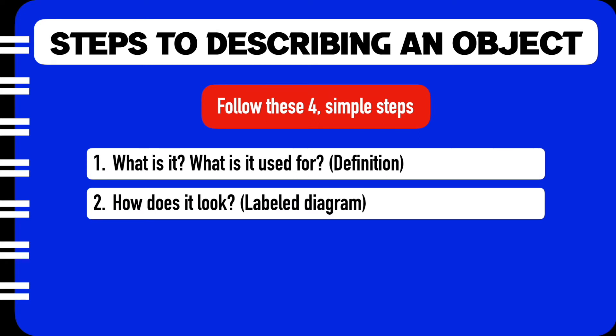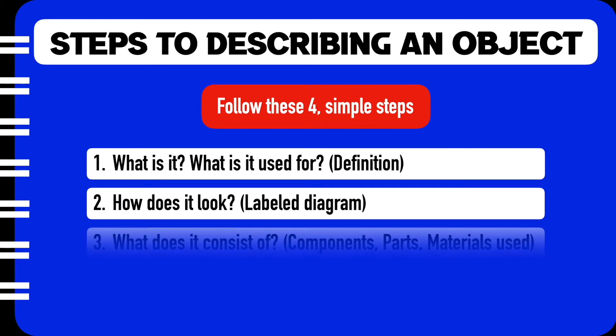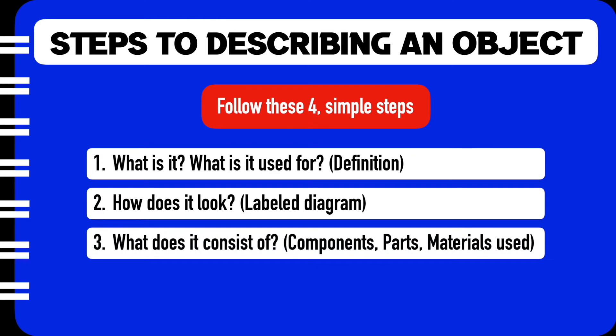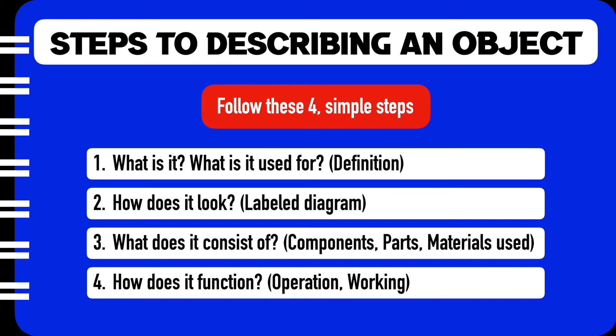The second part of a description requires us to tell the reader about the look of the particular object, and this can be done through a labeled diagram. The third part needs the technical writer to explain to the reader what are the different components or parts that the object is made of. And the last part of a description tells the reader about how the particular object functions.